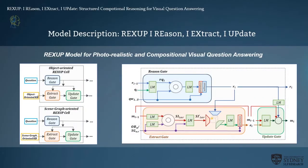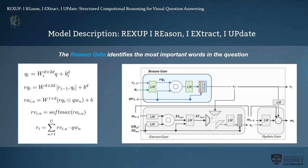We'll go through more details about our deep reasoning and integration model RECSUB — region, extract, and update cell. The RECSUB network contains two parallel branches: object feature oriented and scene graph oriented. Each branch has a sequence of RECSUB cells, and each cell operates for one reasoning step and consists of a region gate, extract gate, and update gate. At each reasoning step, the region gate in each RECSUB cell identifies the most important words in the textual question and generates a new reasoning state for the extract gate and update gate.